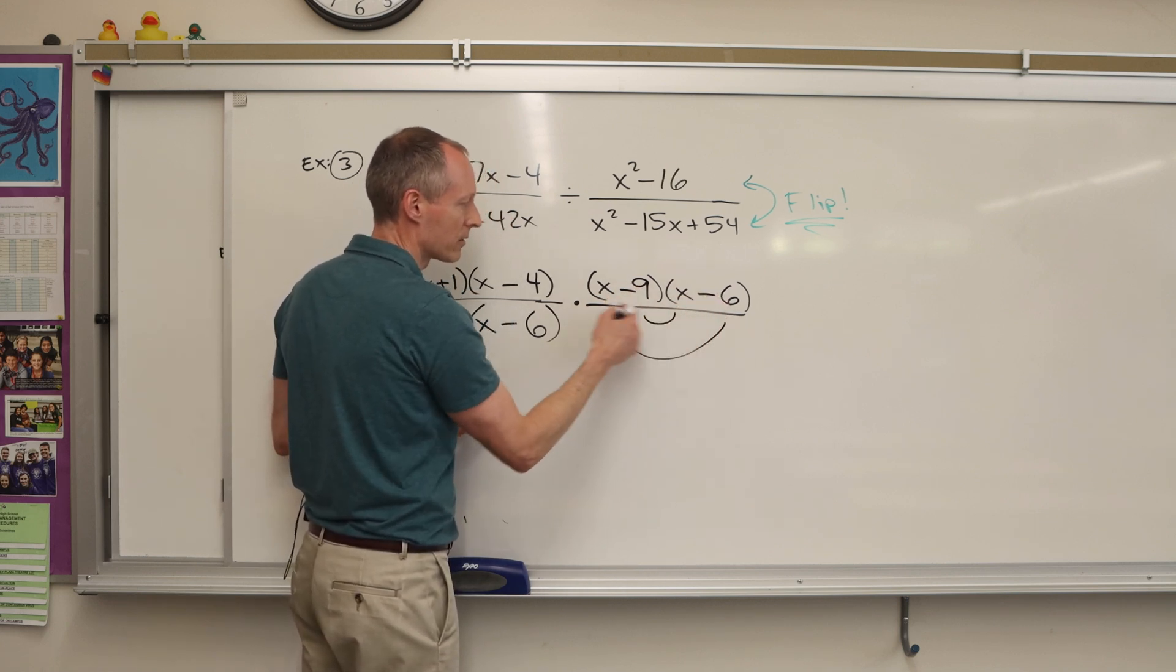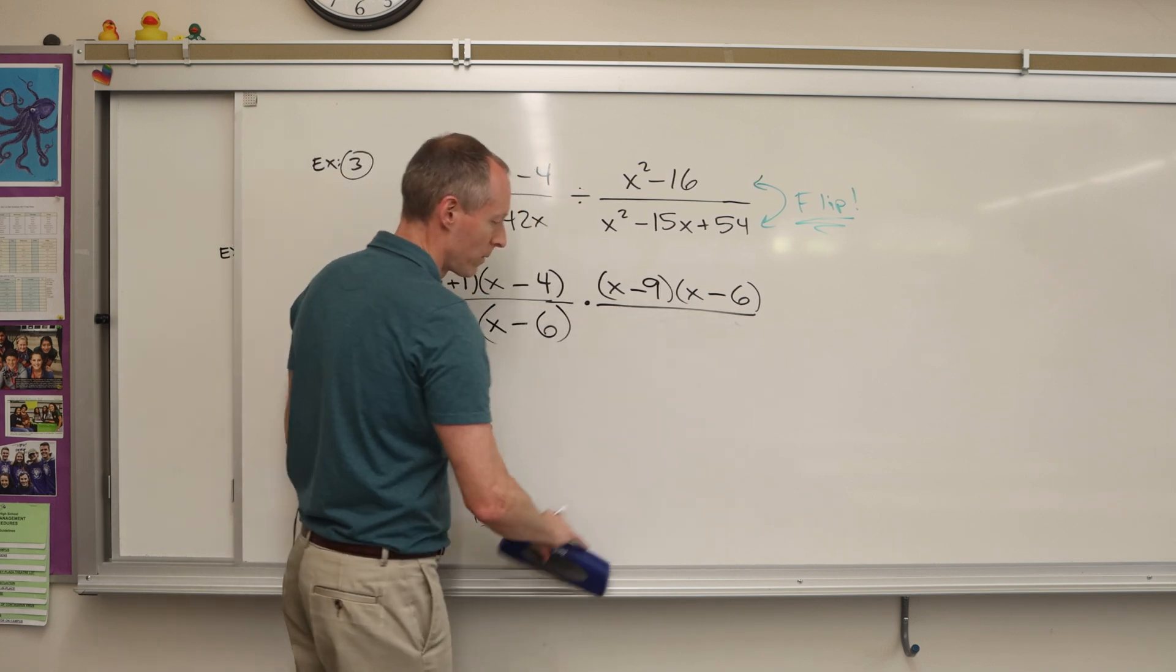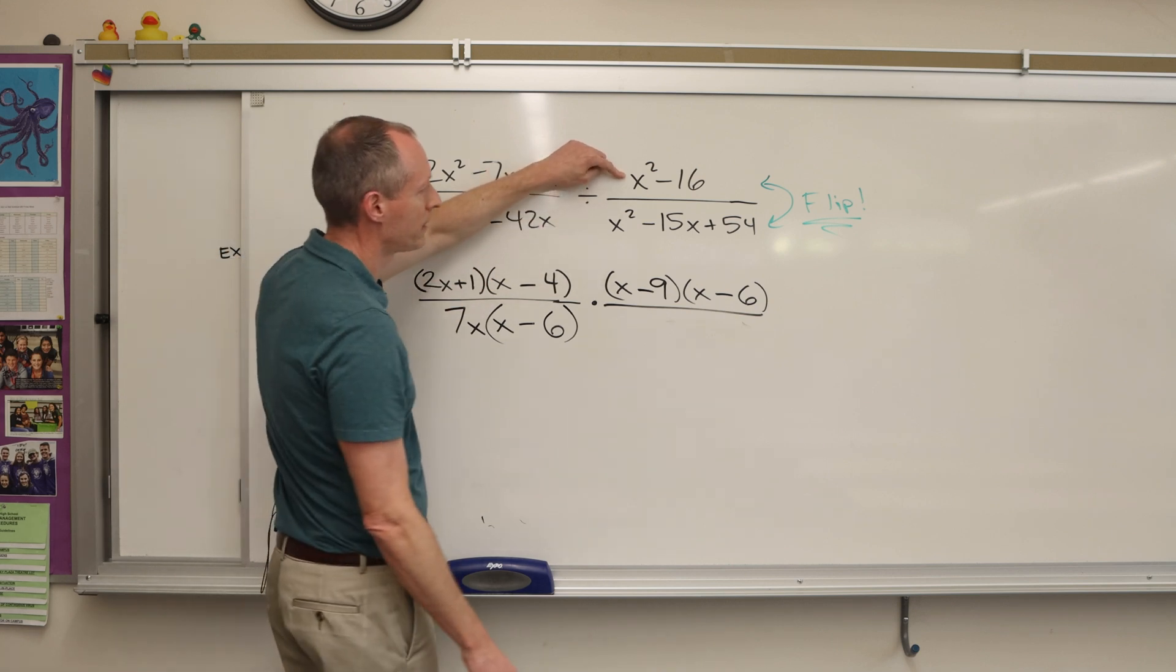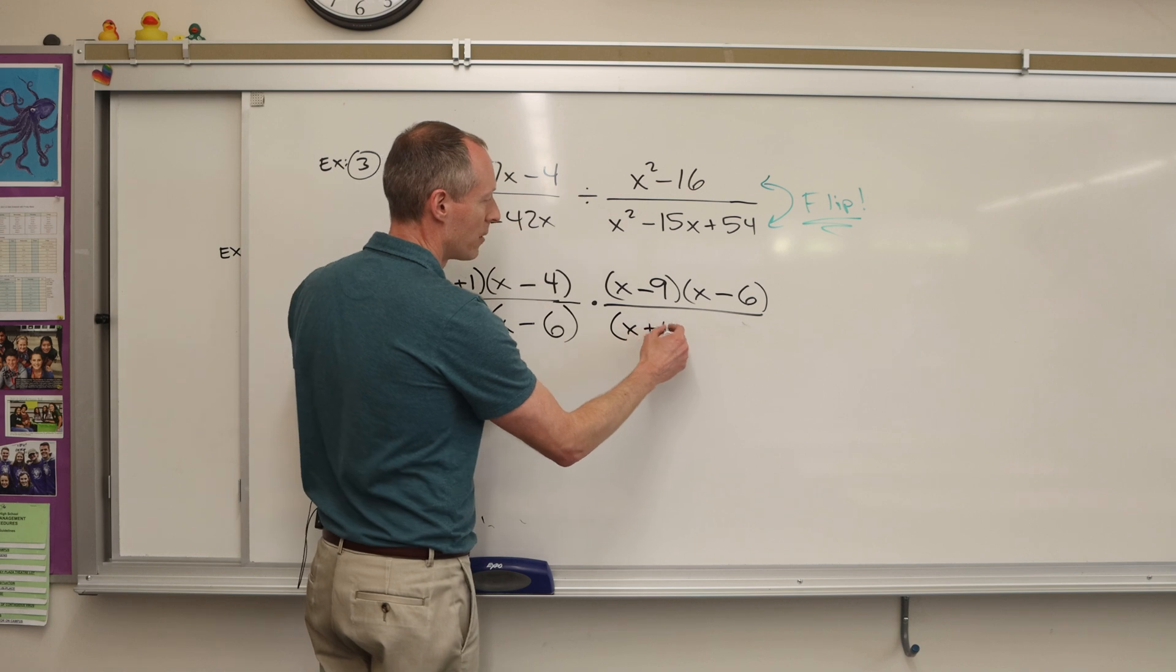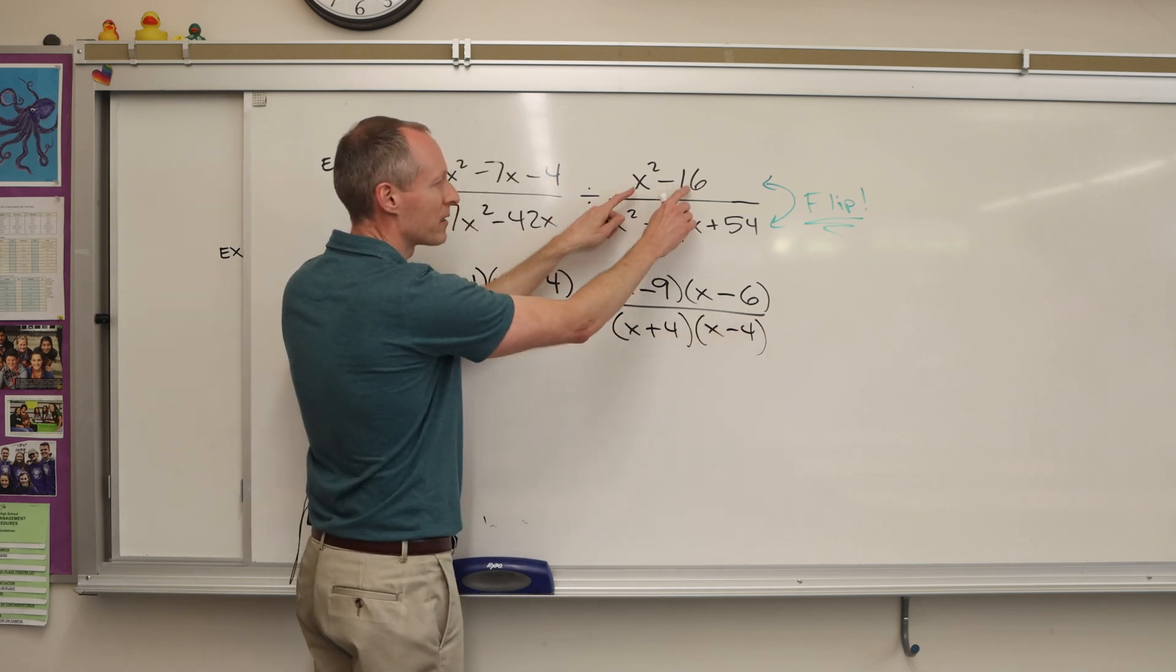So you get negative 6x minus 9x does combine for negative 15x. This goes to the bottom. This is the difference of two squares. So x plus 4, x minus 4. So you have to recognize perfect squares. For example, 4, 9, 16, 25, 36, 49, etc.